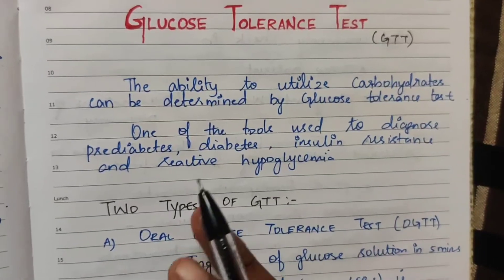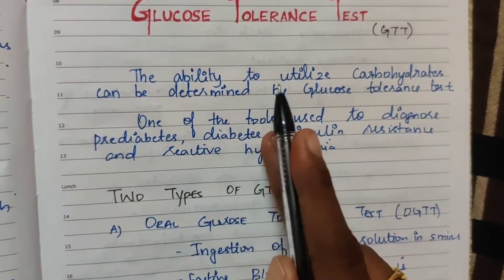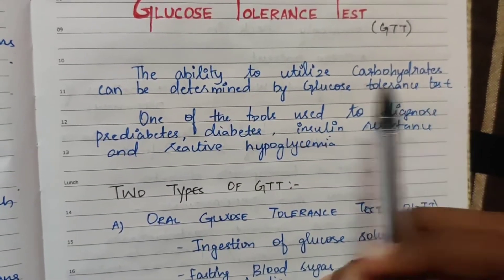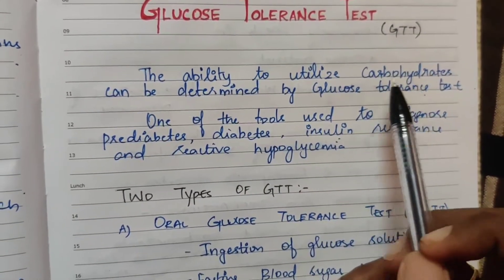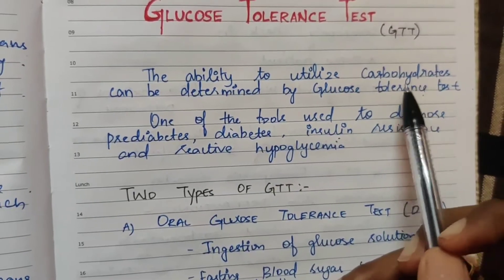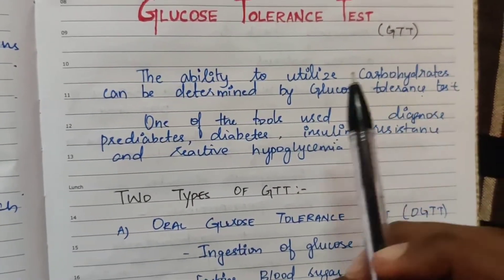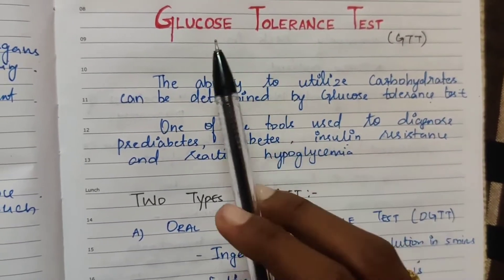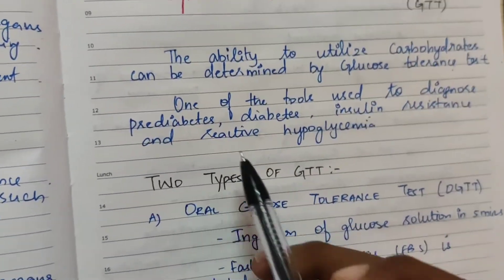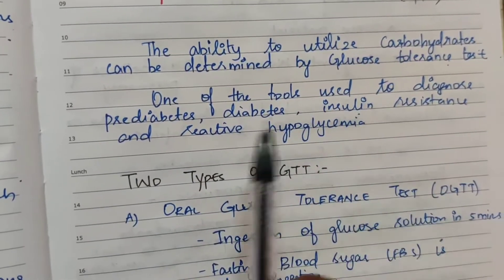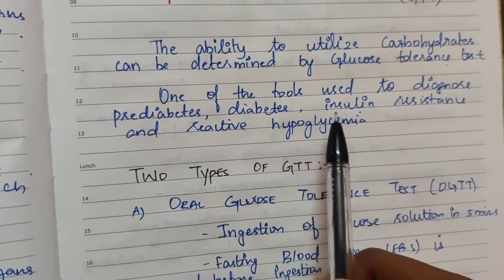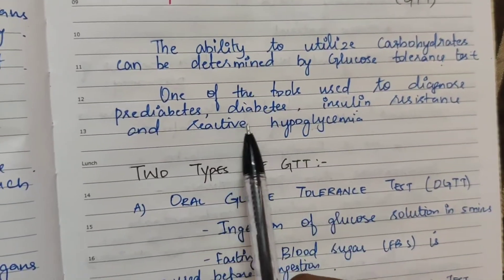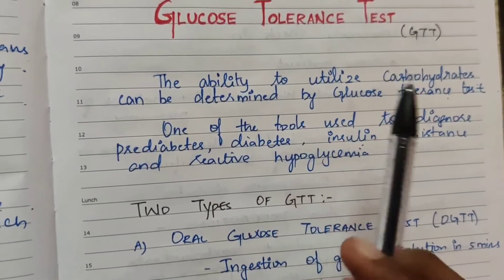Glucose Tolerance Test: the ability to utilize carbohydrates can be determined by the Glucose Tolerance Test. It is one of the tools used to diagnose pre-diabetes, diabetes, insulin resistance, and reactive hyperglycemia.